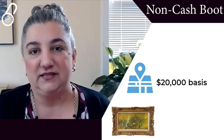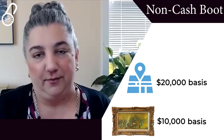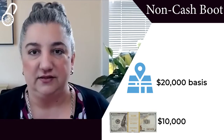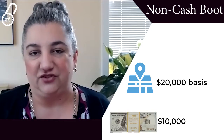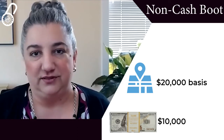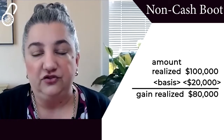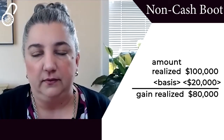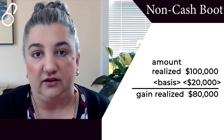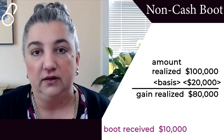What if instead of cash, the owner of Blue Acre offers a painting worth $10,000? The result is very similar — Blue Acre will still end up with a $20,000 basis, and that non-cash boot, the painting, will take as its basis its fair market value of $10,000. On the recognition aspect, it's exactly the same whether the taxpayer receives cash boot or non-cash boot: it's still $10,000 of boot, and $10,000 of the $80,000 of realized gain is recognized.